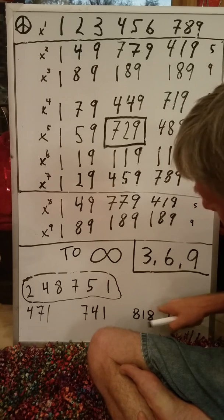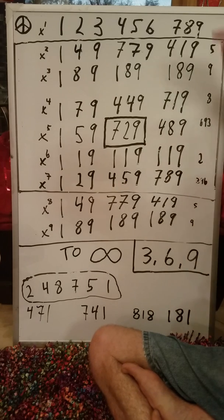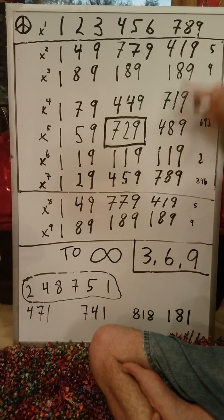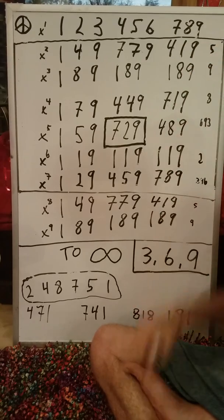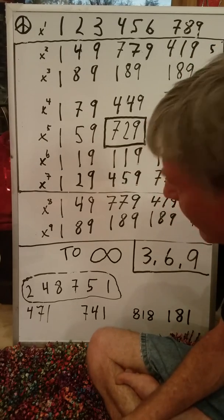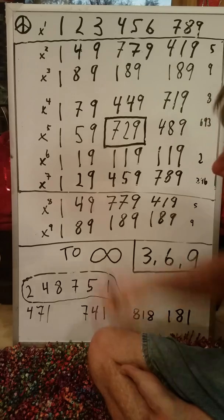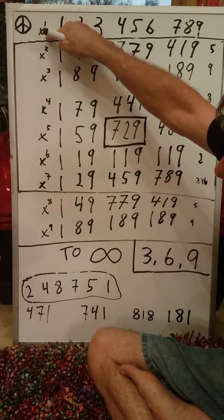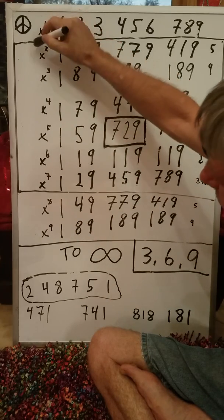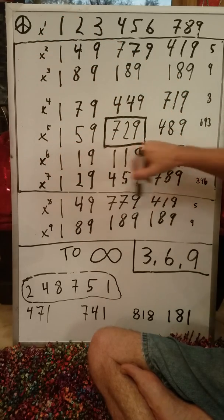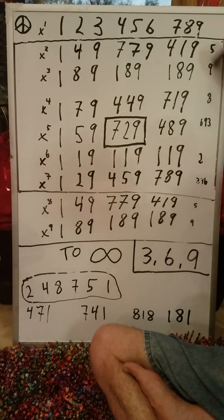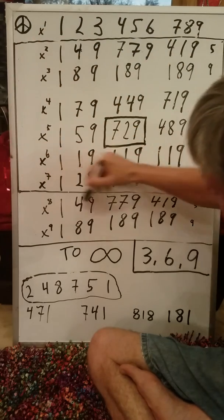And we have the 8, 1, 8, 1, 8, 1 sequence — repeating on and on. So the whole thing is always repeating. These are the repeating sequences here — the six of them.